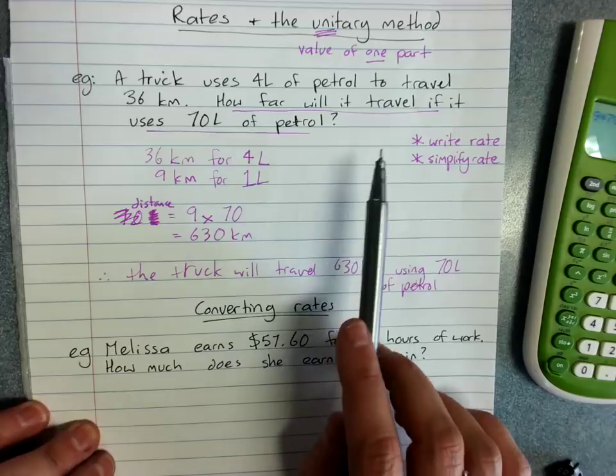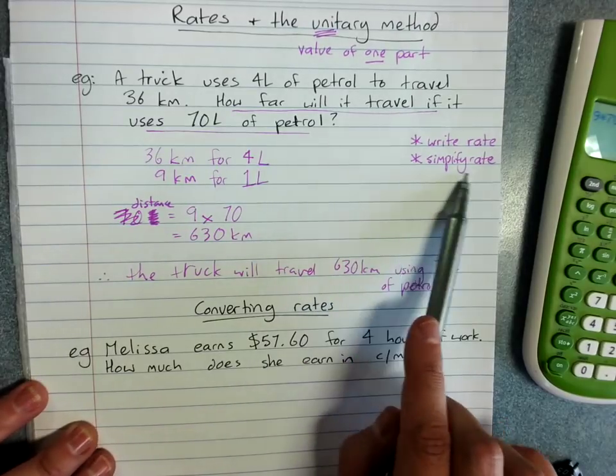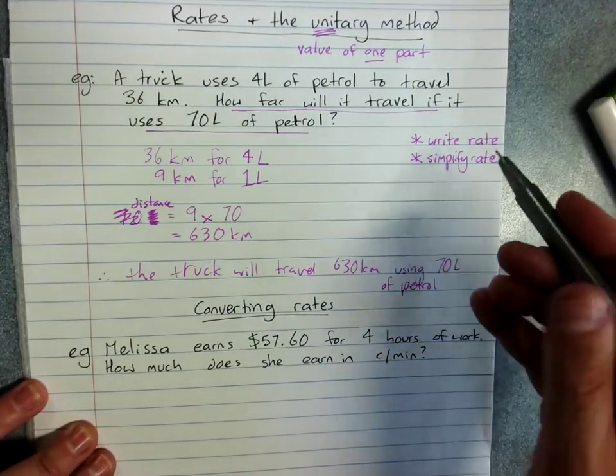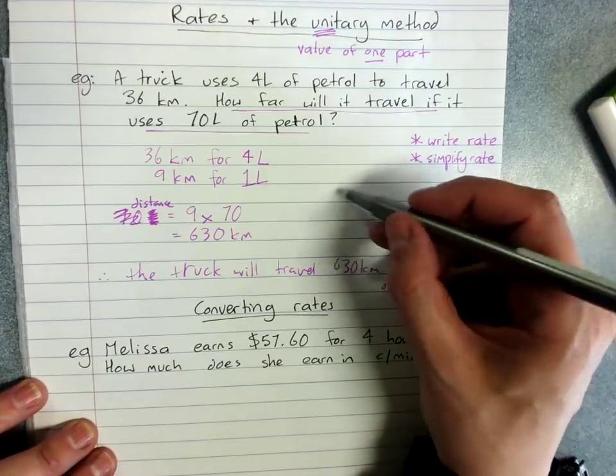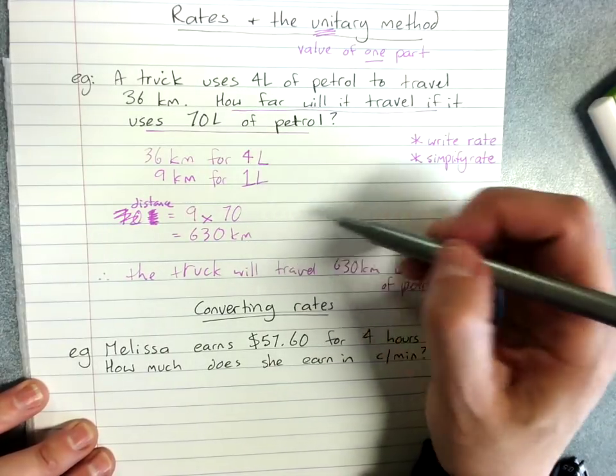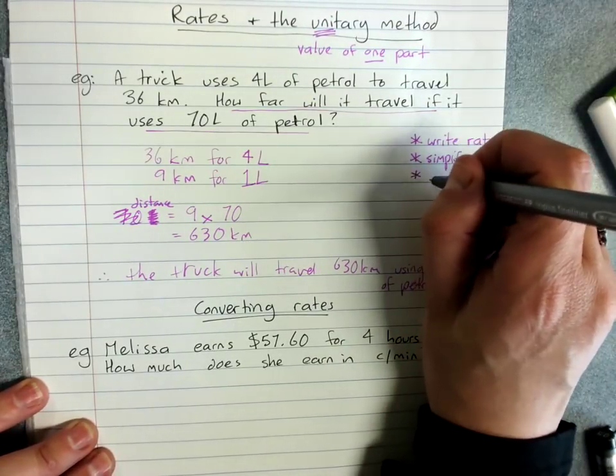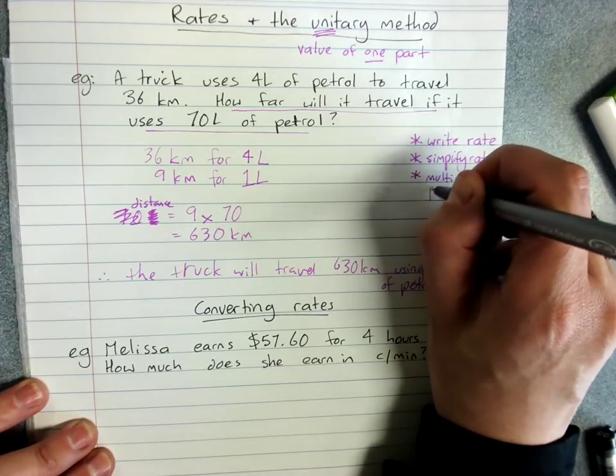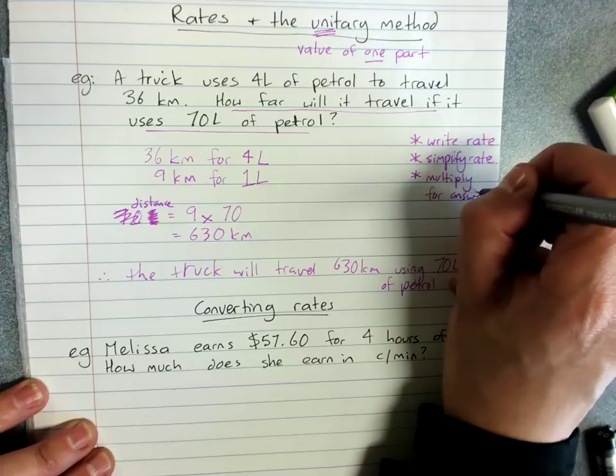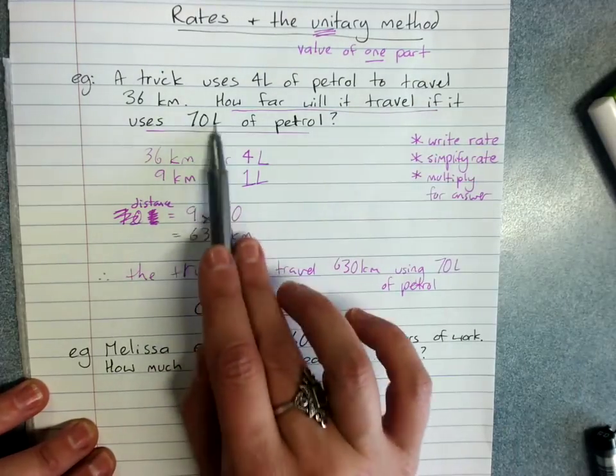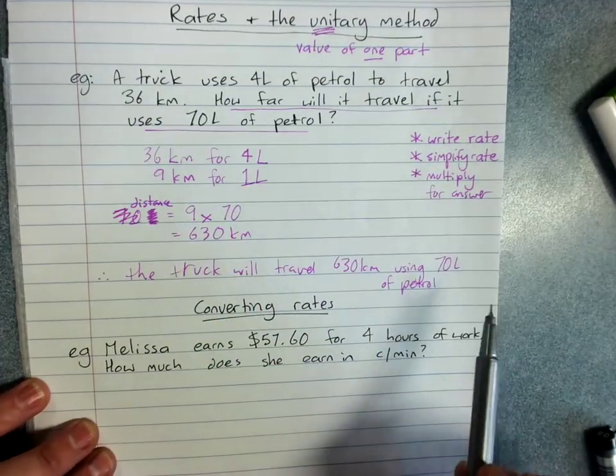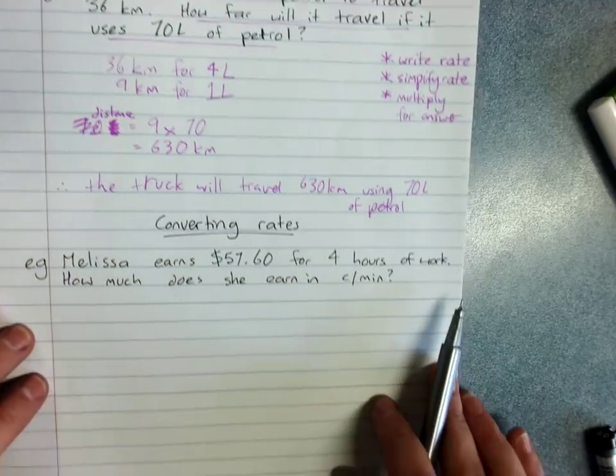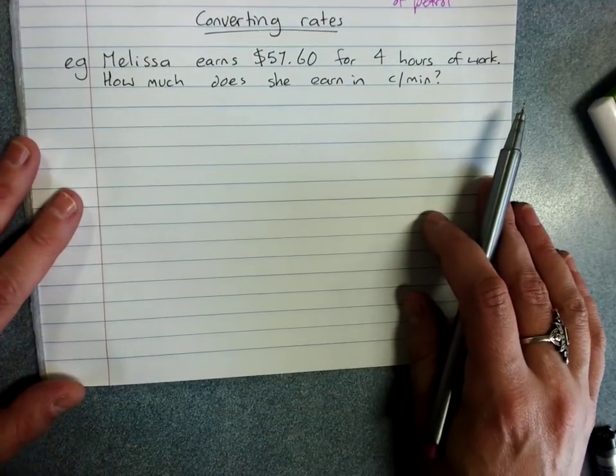So you write your rate, you simplify your rate, and then you've got one of whatever the thing is and you will multiply for your answer. So you'll look for how many you're looking for and multiply by that many. Now often we need to convert rates.